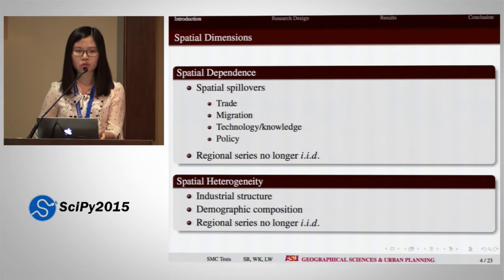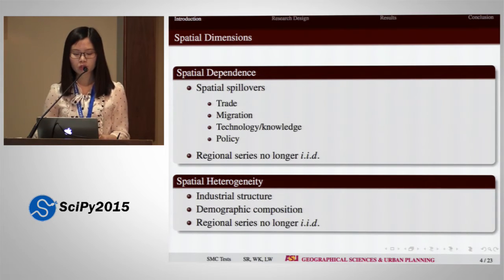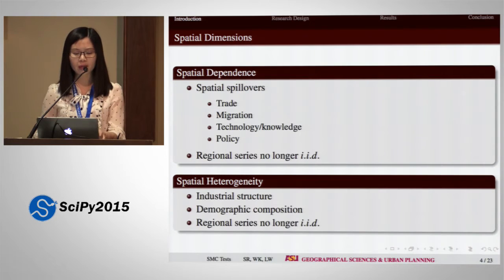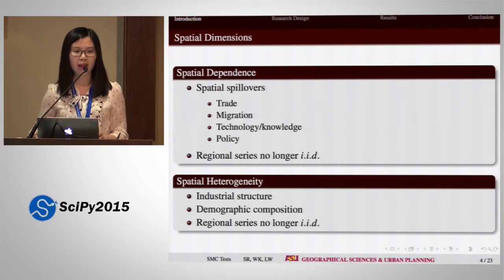As can be seen from the table, states in the poorest class have a 92% probability of staying poor, and states in the richest class have a 94% probability of remaining rich, while states in the three middle classes have more probability of moving to other classes. However, this approach falls short in fully addressing spatial dimensions, assuming that regional units are independent and identically distributed. Space has already been recognized as playing an important role in international and regional economic growth. Spatial dependence can arise from trade, technology, and knowledge spillovers, while spatial heterogeneity can be due to varied industrial structures across different spatial regimes.